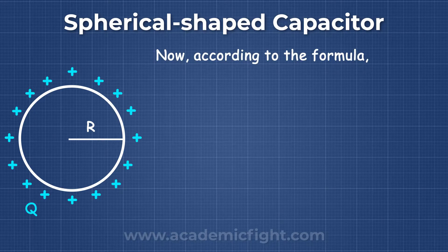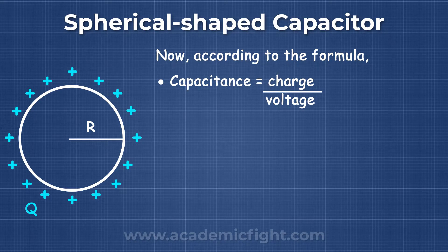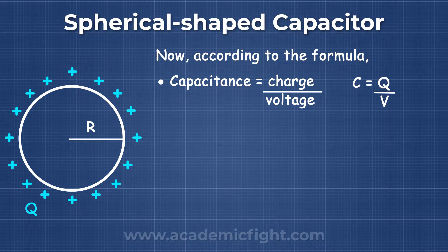Now, according to the formula, capacitance is equal to charge by voltage. C is equal to Q by V.